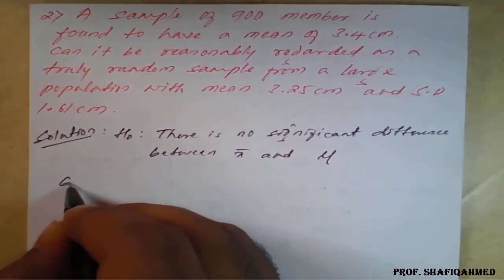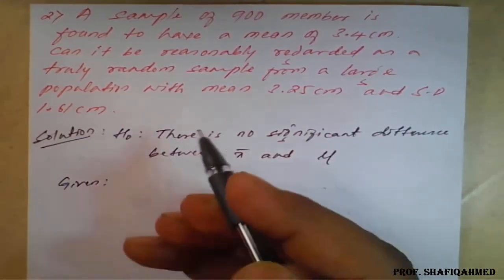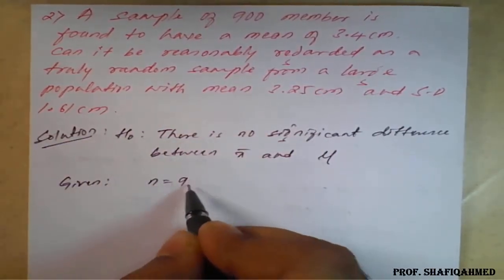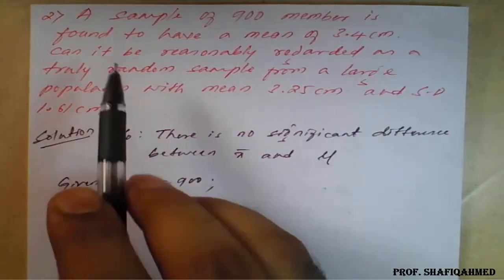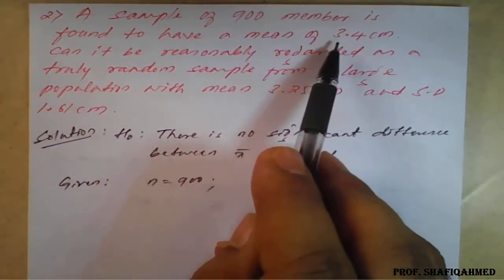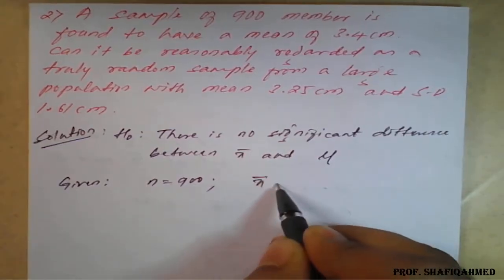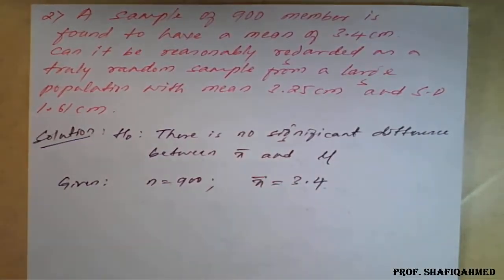The given data: sample of 900 members, so n = 900. Found to have a mean, how much here? 3.4. So sample mean is X̄ = 3.4.